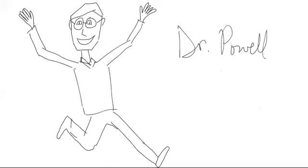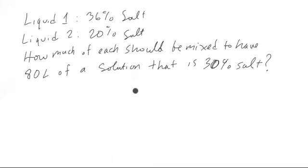Welcome to a lesson with Dr. Powell. Let's take a look at a word problem for a system of equations. So let's first understand what's going on, what the goal is. We have a liquid and another liquid. We know that this one is 36% salt. This is 20% salt. We want to know how much of each should be mixed to have 80 liters of the solution that is 30% salt.